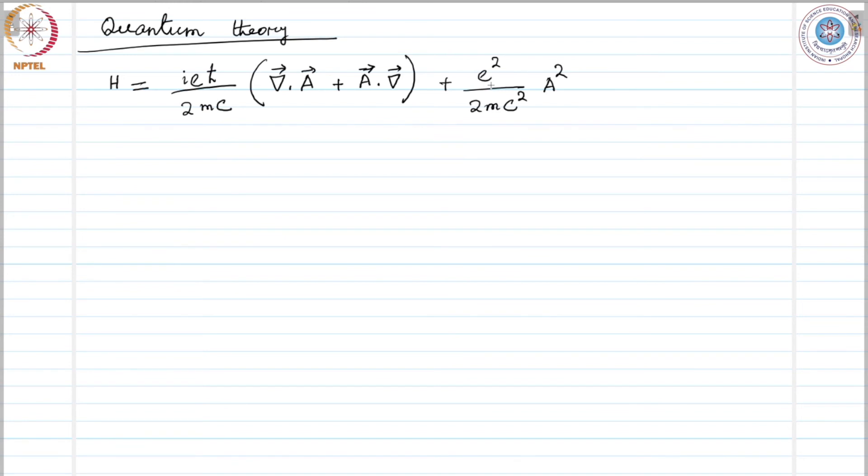This is the part of the Hamiltonian, so the Hamiltonian that comes due to the magnetic field. For an atomic electron these terms may usually be treated as a small perturbation.